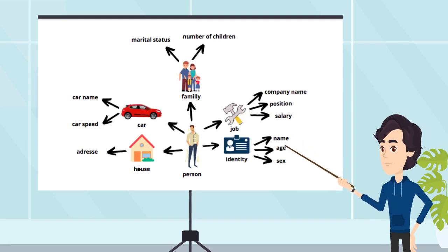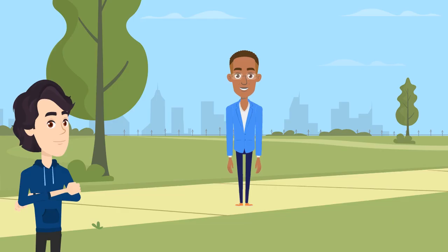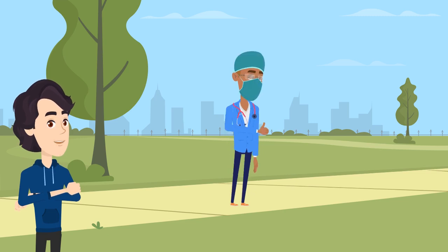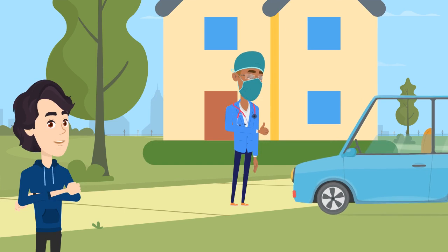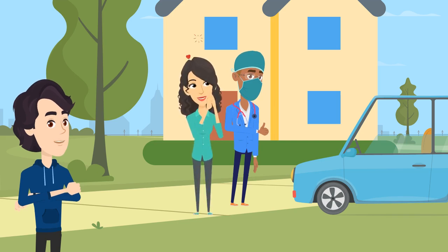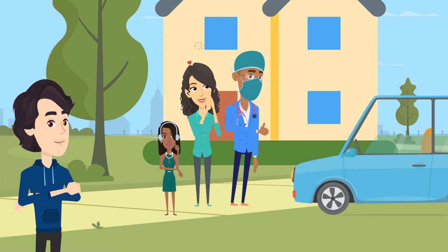For example, we want to create a class to instantiate person objects. The class has two attributes: the name and the age of the object. We create with the class this object — let's call it Jack, he is 30 years old. Jack has a job, so the class will also include which job he has and maybe his salary. Later, Jack bought a house and a car, so the class will include the type of his car, its color, and the address of his house. After that, Jack found the love of his life, got married, and became a father of a beautiful girl, so the class should also include the name of his wife and his daughter.